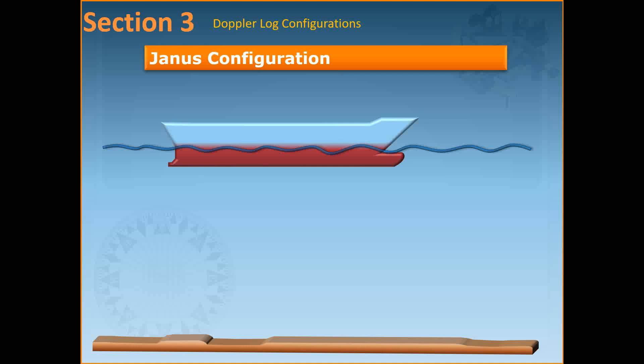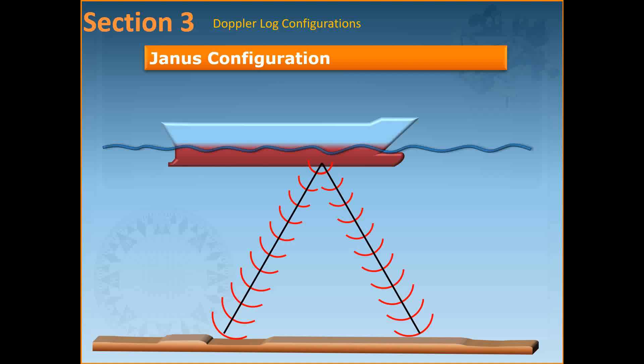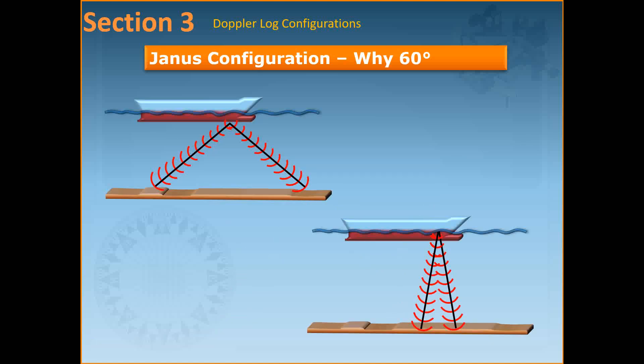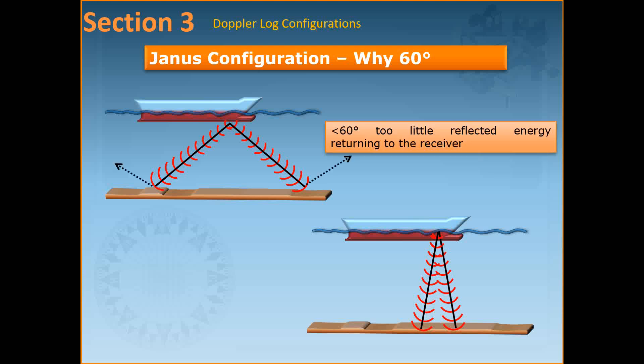In the Doppler log there is something called the Janus configuration. It normally uses two beams — one pointing forward and one aft — to eliminate errors caused by pitching of the vessel. Janus is named after a Roman god who had two heads, one facing forward and one facing aft. The angle of the two beams is about 60 degrees to the horizontal and not directly perpendicular. If the angle were less than 60 degrees there would be too little reflected energy for the receiver, and if more than 60 degrees there would not be a big enough forward component to get a reliable speed measurement.